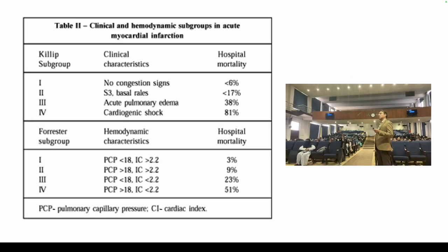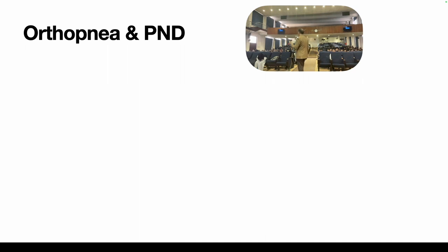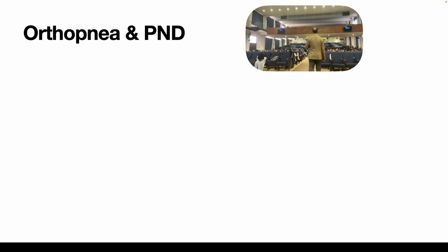The Killip classification is used in patients with acute myocardial infarction who develop shortness of breath or heart failure. It has four classes with associated mortality data. Grading the patient is important to assess the urgency of treatment and to monitor whether the patient is improving or not improving with treatment.